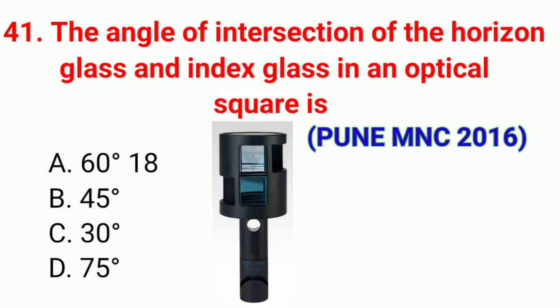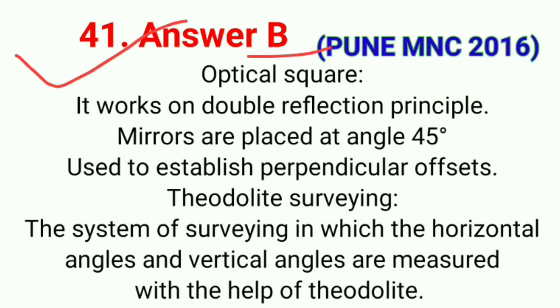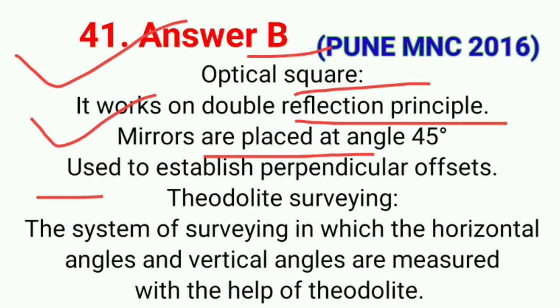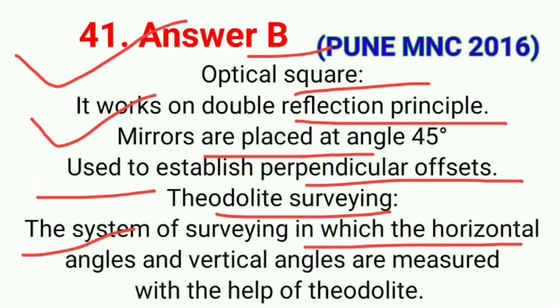Question number forty-one: The angle of intersection of the horizon glass and index glass in an optical square is. The correct answer is option B, 45 degrees. An optical square works on the double reflection principle; mirrors are placed at 45 degrees and are used to establish perpendicular offsets. Theodolite surveying measures horizontal and vertical angles with the help of a theodolite.